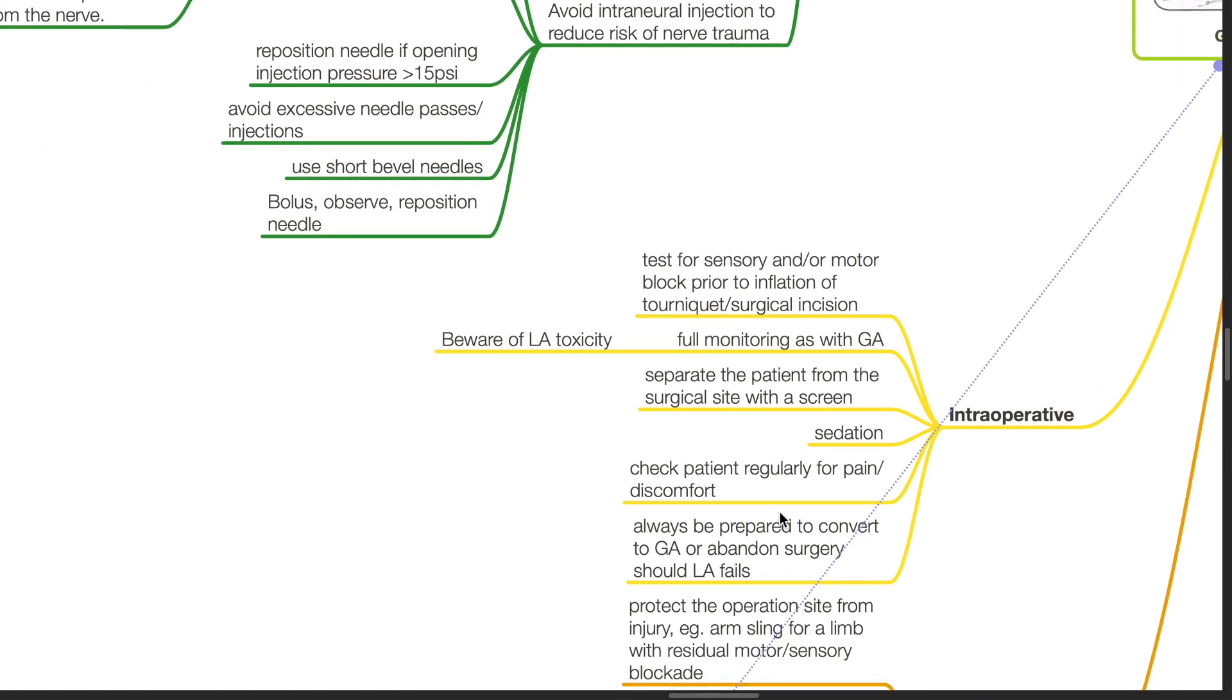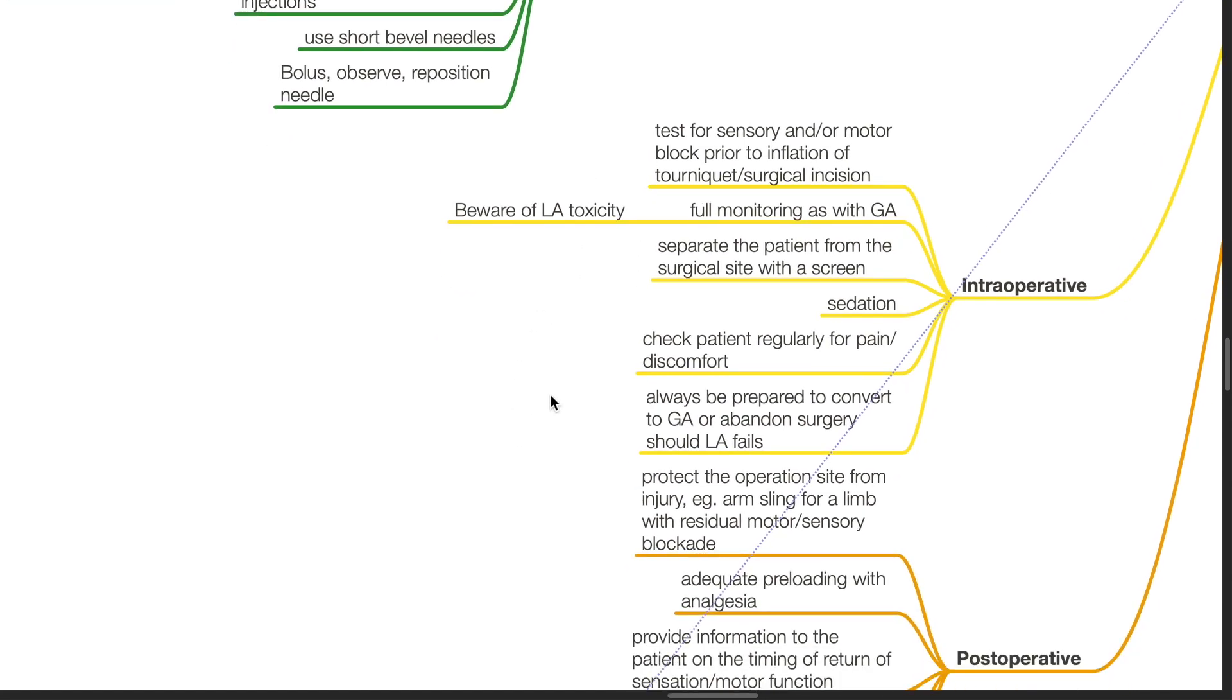Intraoperative measures: test for sensory and/or motor block prior to inflation of tourniquet and surgical incision. Full monitoring as with general anesthesia. Beware of local anesthetic toxicity. Separate the patient from the surgical site with a screen. Use appropriate sedation. Check patient regularly for pain or discomfort. Always be prepared to convert to GA or abandon surgery should local anesthesia fail.